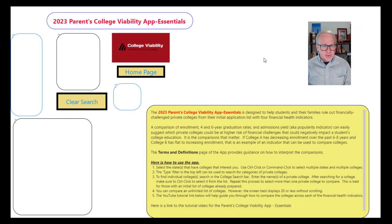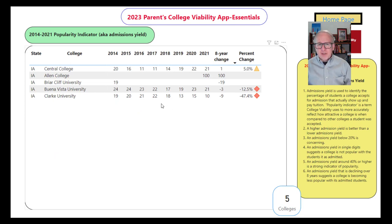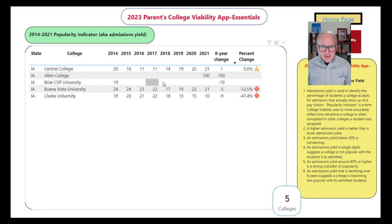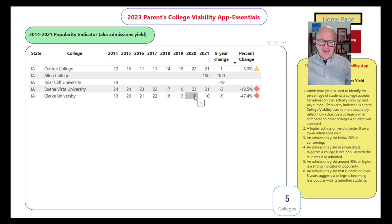Let me go back to the home page. The six-year graduation rate has similar numbers and interpretation. Let's look at admissions yield for these same five colleges. Admissions yield represents the percent of students a college accepted that actually show up on day one and pay tuition — so the higher the number, the better. A 22–23% yield, also known as a popularity indicator, is not bad but not great. Anytime you get into the teens or lower, you have to worry that the market is saying they have better options.